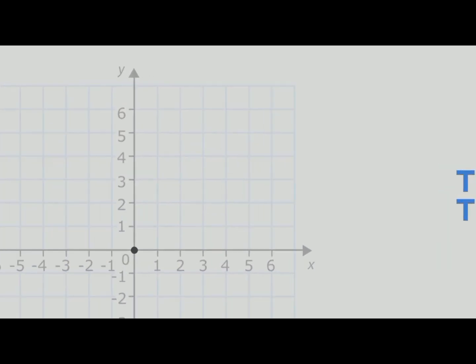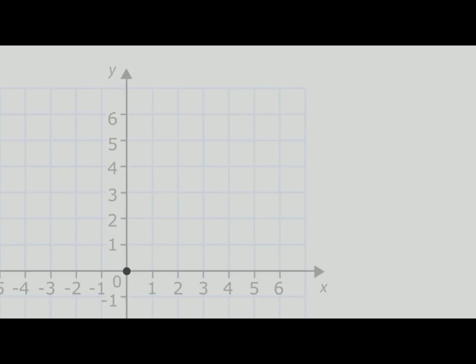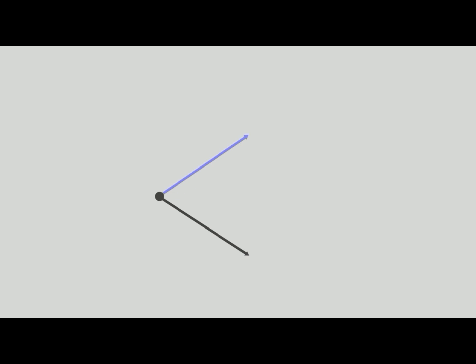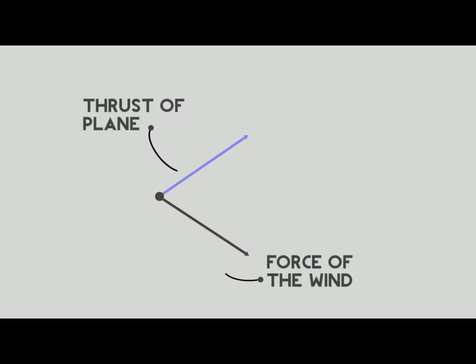To solve this, we will use our familiar coordinate system. The thrust of the plane was given by this vector — we can plot a point on the graph using this vector and draw an arrow from the origin to that point. This is the vector representing the force of the plane. Similarly, we can draw a vector for the force of the wind.